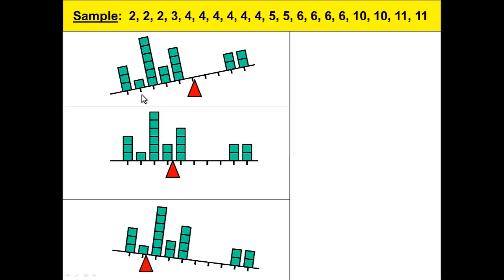So I place one block above this tick mark and six blocks above the tick mark for number 4, two blocks above the tick mark for number 5, four blocks above the tick mark for number 6, and two blocks each for the tick marks for 10 and 11.